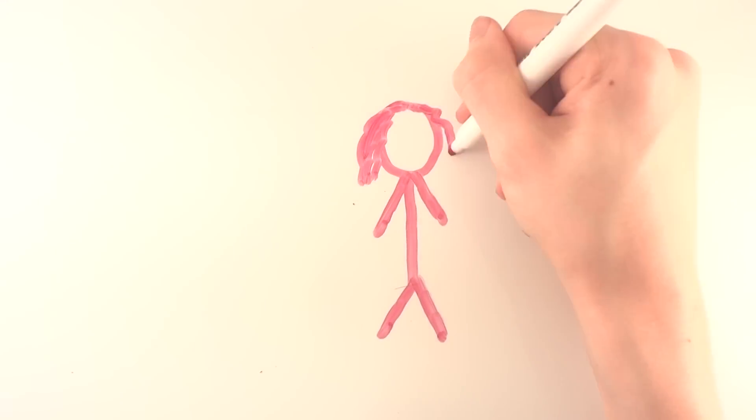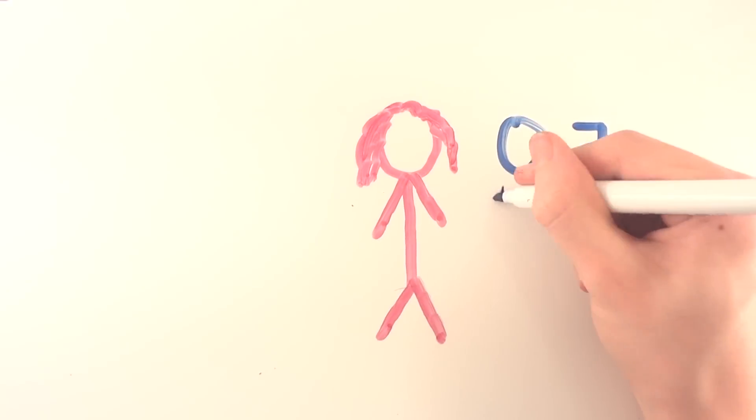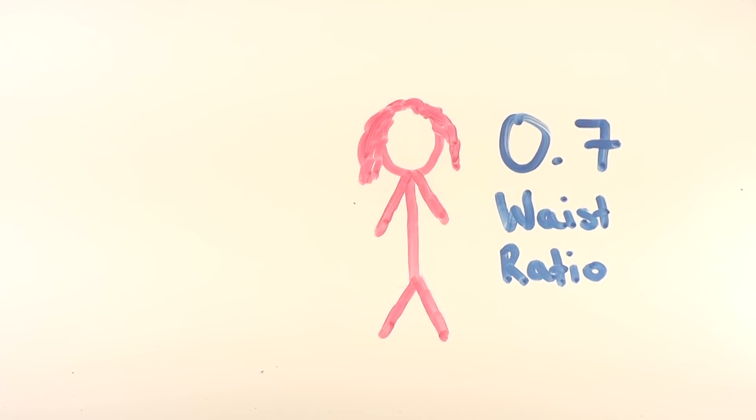Studies have shown that men favor a waist to hip ratio on a female of 0.7. This has to do with women tending to put on fat around their stomach as they age, coinciding with them becoming less fertile than when they were younger.